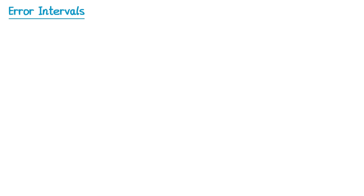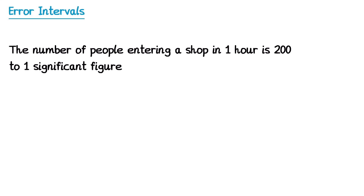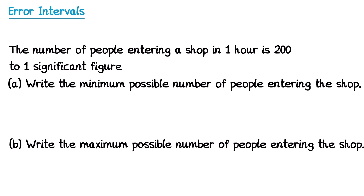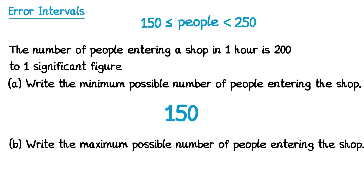Sometimes there are worded questions where you need to be particularly careful about the answers you give — these are much more common in AQA papers. For example: the number of people entering a shop in one hour is 200 to one significant figure. We need to write down the minimum and maximum number of people entering the shop. We could start by doing an error interval: the number of people must be somewhere in between 150 and 250. The minimum is 150 — if it were any lower it would have rounded to 100, not 200. But you need to be careful with the maximum: the upper bound is 250, but if it were actually that many it would round up to 300. Since the maximum must be a whole number, the maximum number of people would be 249.